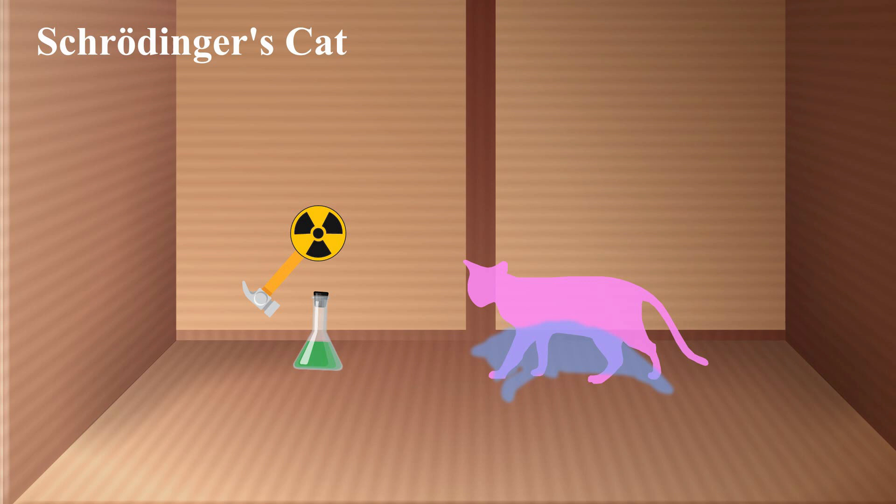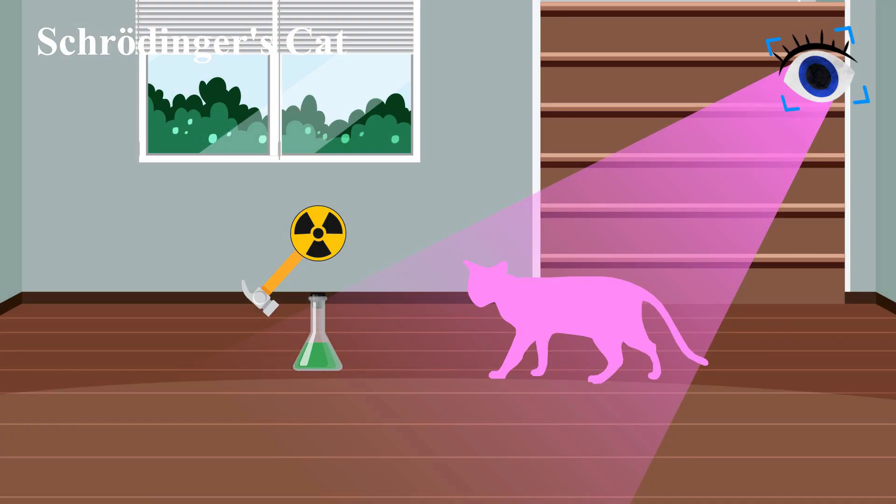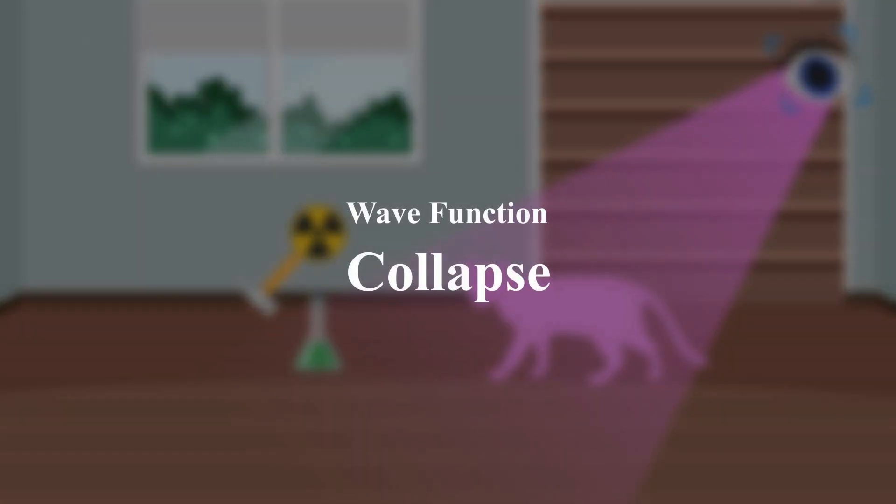According to the Copenhagen interpretation, the wave function describes the superposition of the cat being alive and dead. Before we open the box, the cat is simultaneously alive and dead, each with a 50% chance. However, as soon as we open the box and observe the cat, its superposition state collapses, forcing the cat into a definite state of either being alive or dead. This phenomenon is known as wave function collapse.